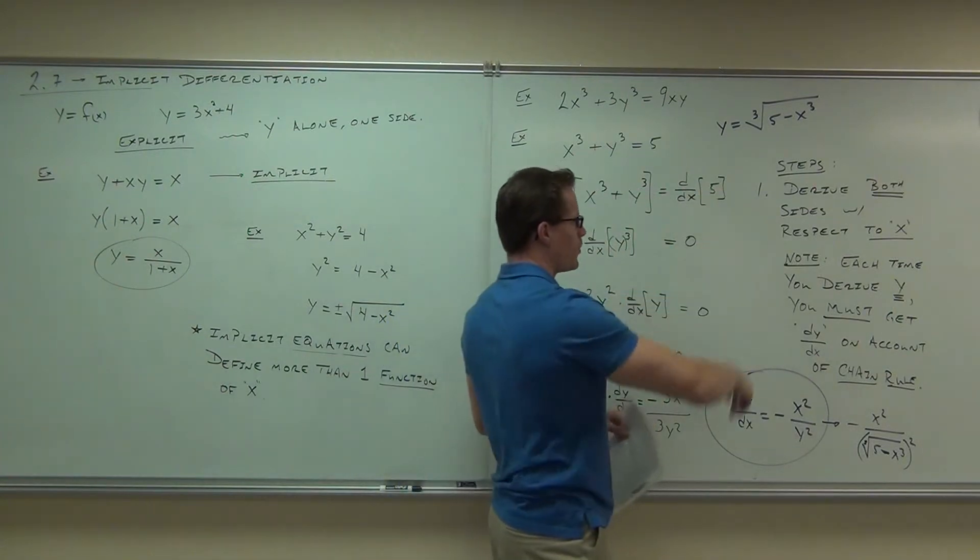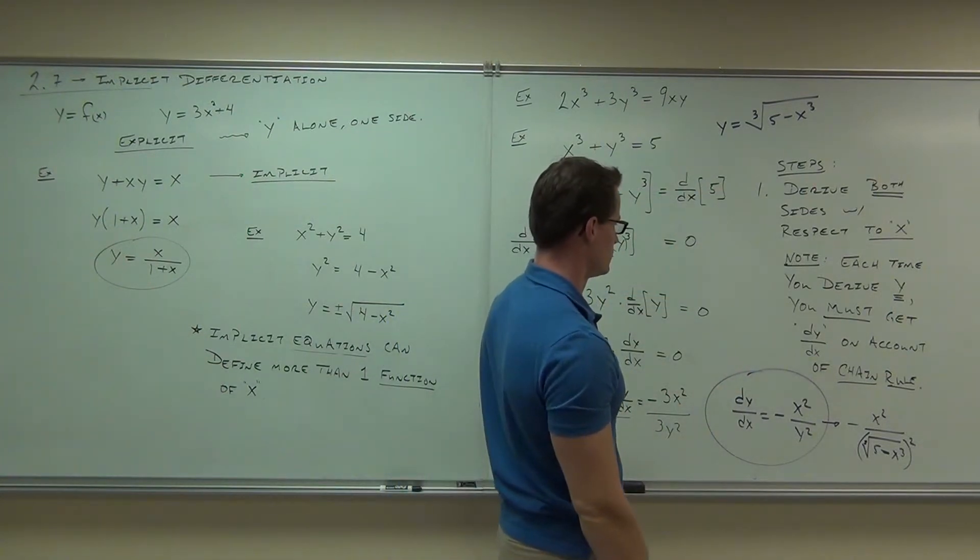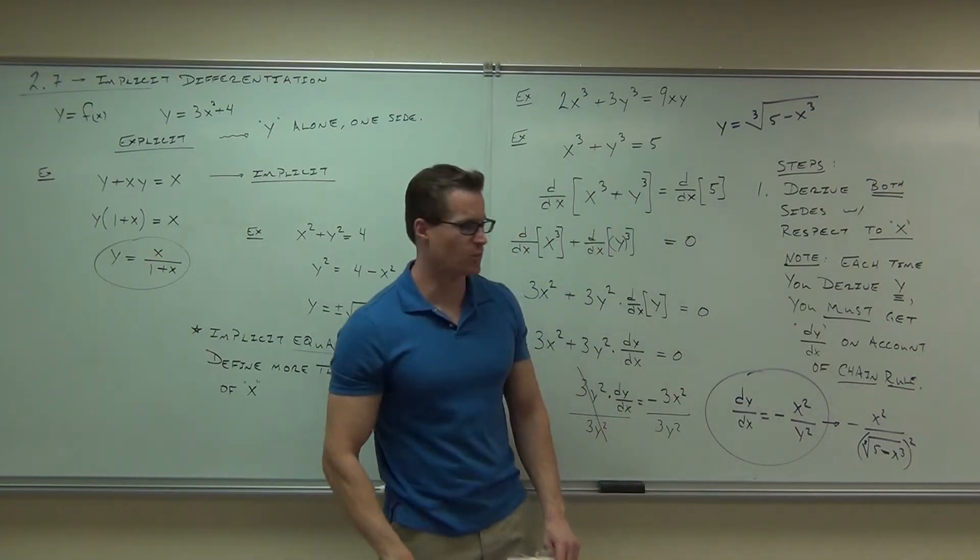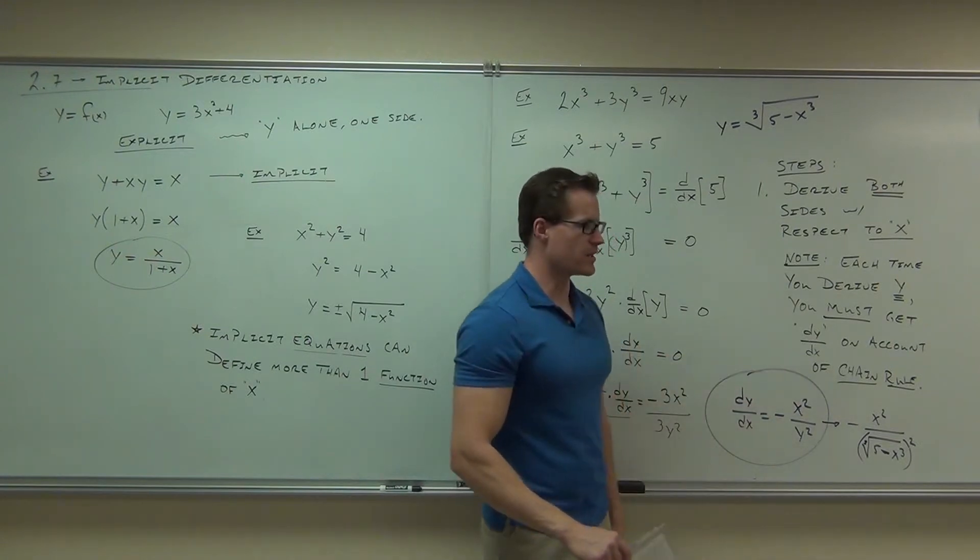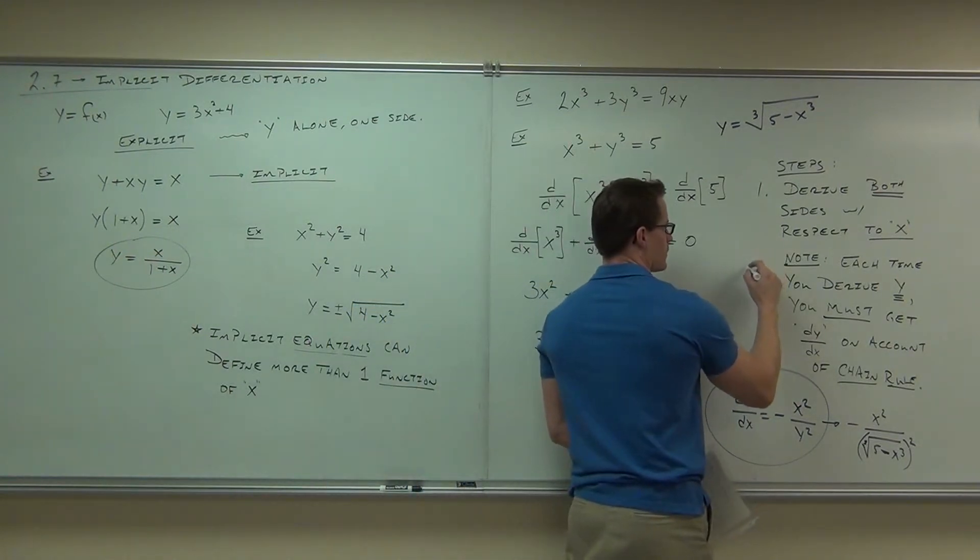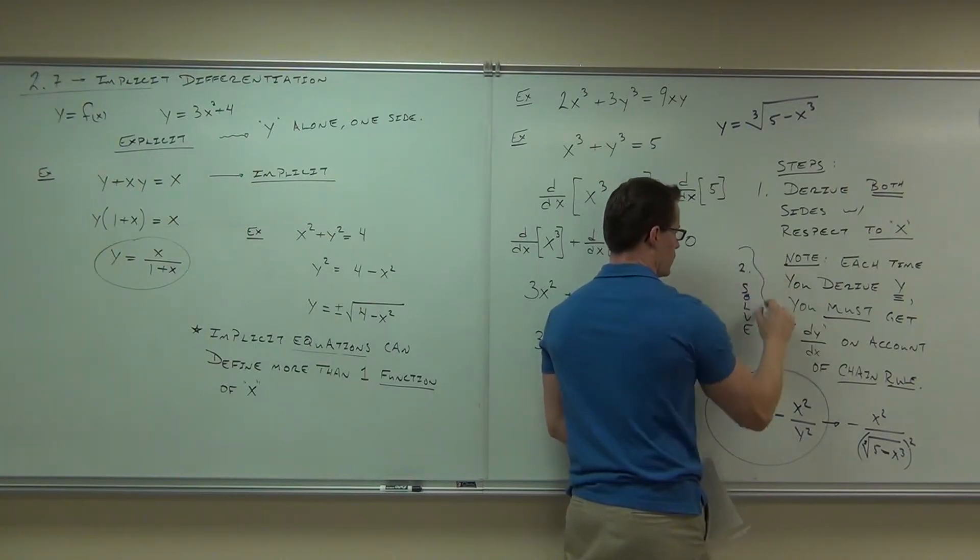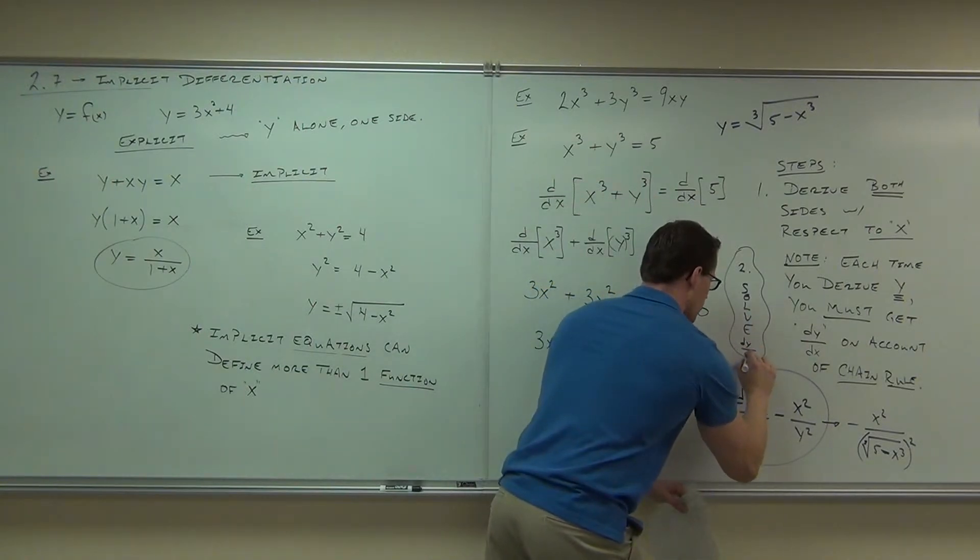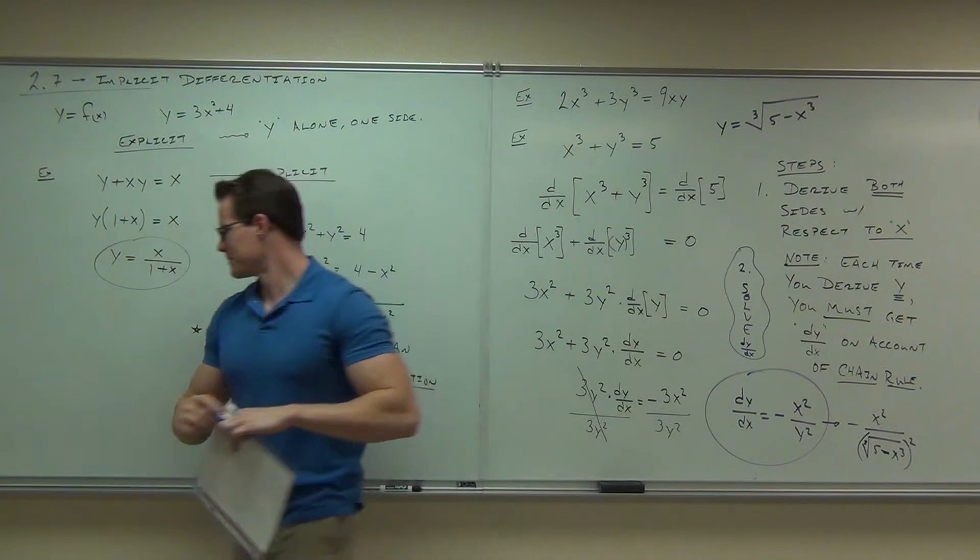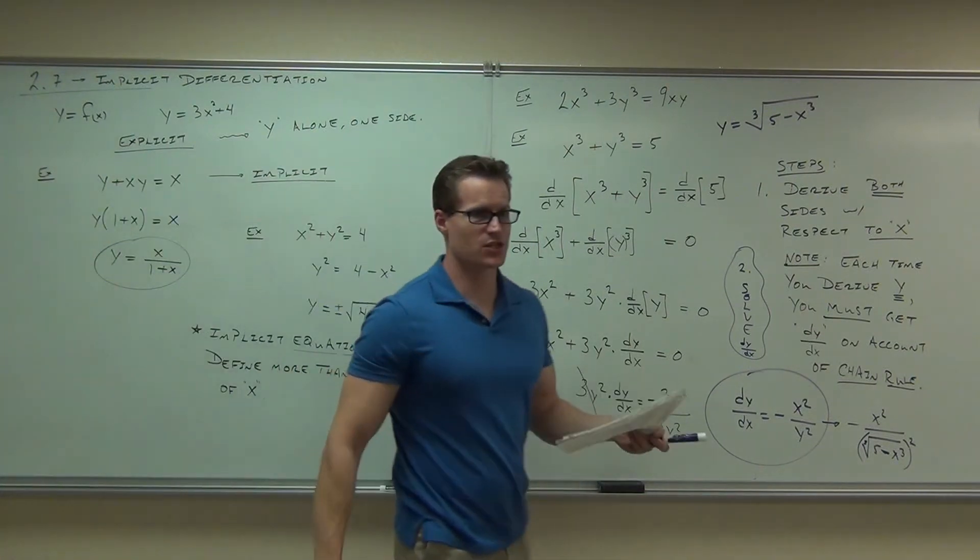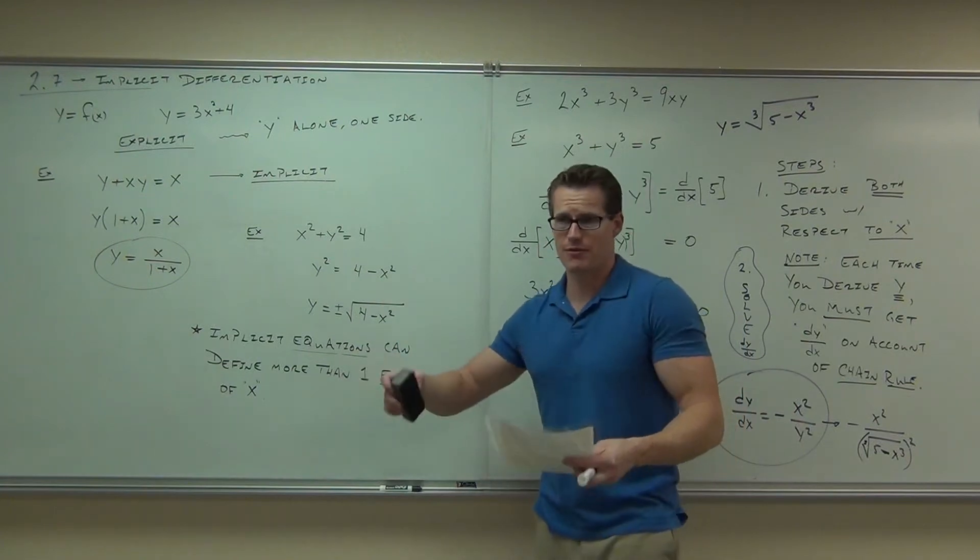So we do this. Step one. I guess there's only one step. Always step two. Solve for dy dx. So write a step two on your paper somewhere. Step two is solve for dy dx. Okay, guess what? That's it. That's implicit differentiation. If you have this idea down, you have implicit differentiation down.